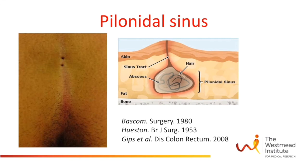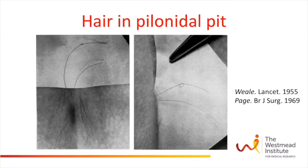Hairs are present in the pilonidal sinus in 93–100% of patients with symptomatic pilonidal disease. It has been proposed that the hairs enter these midline pits by their roots, driven by their distally directed scales, which also prevent their expulsion.